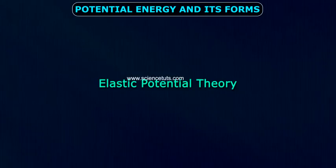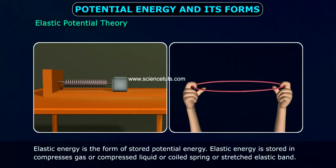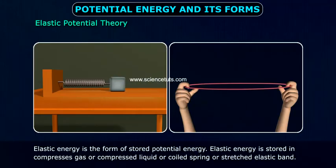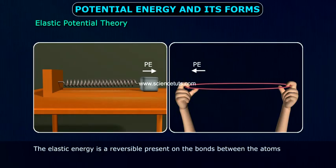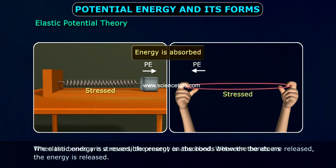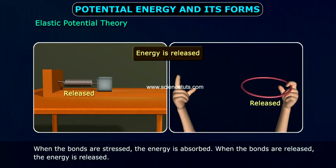Elastic potential theory. Elastic energy is a form of stored potential energy. Elastic energy is stored in compressed gas or compressed liquid, a coil spring or stretched elastic band. The elastic energy is present in the bonds between the atoms. When the bonds are stressed, the energy is absorbed. When the bonds are released, the energy is released.